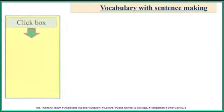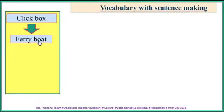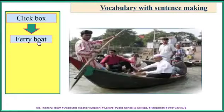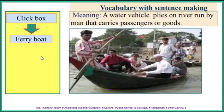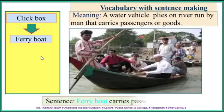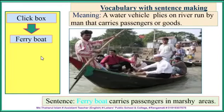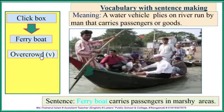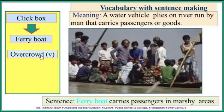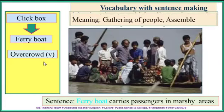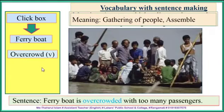Now let's look at the vocabulary. 'Ferry Boat' — look at the picture: people using a boat going from one side to another side. The meaning: a water vehicle that runs on a river, operated by a person that carries passengers. Sentence: 'The ferry boat carries passengers in marshy areas.' 'Overcrowded' — look at the picture: there are a lot of people on the boat beyond its capacity. Meaning: a gathering of too many people. Sentence: 'The ferry boat is overcrowded with too many passengers.'